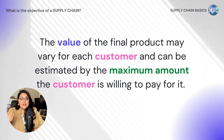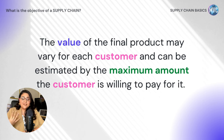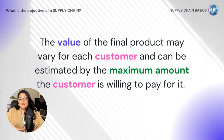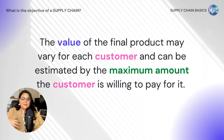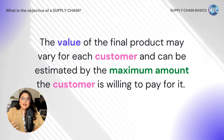The value that a customer represents is really important in order to calculate the supply chain surplus. The value of the final product may vary for each customer and can be estimated by the maximum amount the customer is willing to pay for it. This depends on several factors — what kind of brand it is, whether it's a name brand or generic, and whether the customer appreciates it enough to pay the price the company sets. Value varies from customer to customer, from industry to industry, and depending on what added value is offered.